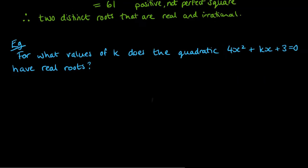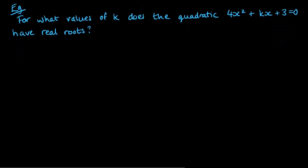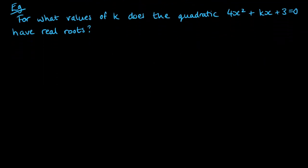For our next example: for what values of k does the quadratic 4x squared plus kx plus 3 equals 0 have real roots? Now for the roots to be real, that discriminant must be 0 or more. So we haven't specified that it's real and repeated or that it's rational or that it's irrational, just that it's real roots. So we need that discriminant to be positive or equal to 0.